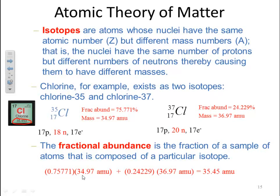In this case, there's only two, so then you would take your 24%, your 0.24229, times its mass of 36.97 AMUs, and gives you a total mass of 35.45 AMUs for your average atomic mass.